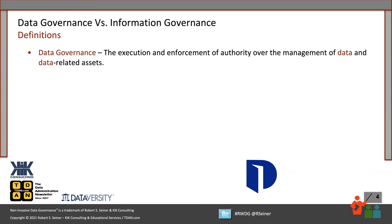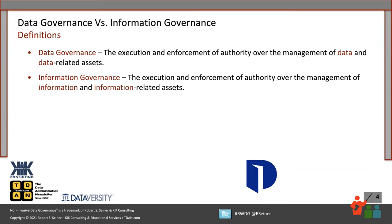I define data governance in some very strong terms. I call it the execution and enforcement of authority over the management of data. I know it's worded strongly and it makes some people cringe, but the reason why we're putting governance in place is to execute and enforce authority to make certain that the right people are doing the right thing in the right way with data across the organization. So if that's my definition of data governance, well, what is information governance? I think the same definition applies: it's the execution and enforcement of authority over the management of information.